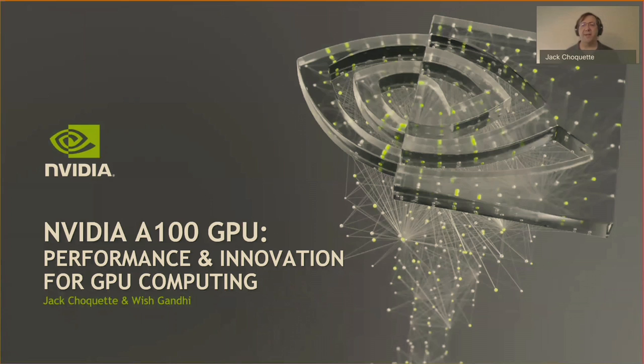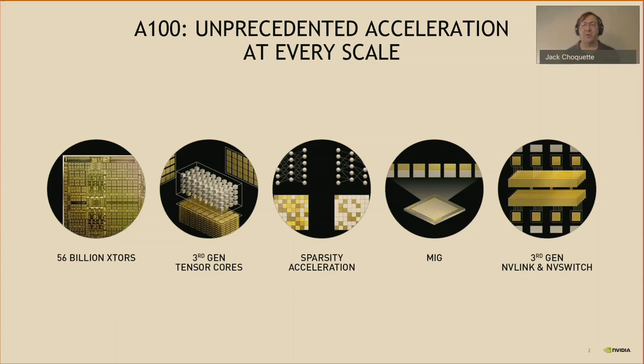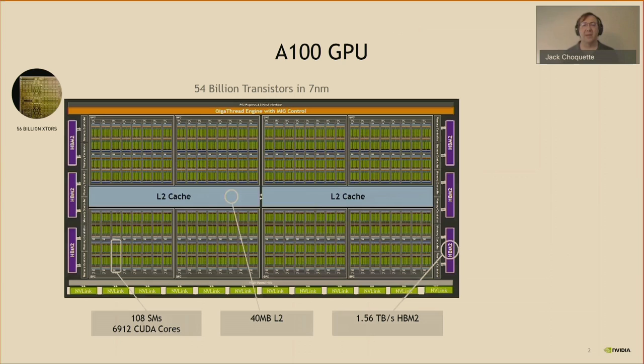Today we're going to be talking about NVIDIA's new Ampere architecture and the A100 GPU. This new GPU provides unprecedented acceleration at every scale. Building on the groundwork laid by our prior GPU architecture, we've added powerful new features which deliver significantly faster performance for HPC, AI, and data analytics workloads. This is a record-setting GPU.